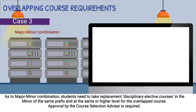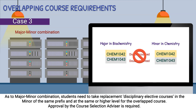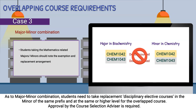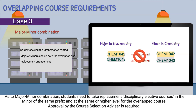As to the major-minor combination, students need to take replacement disciplinary elective courses in the minor of the same prefix and at the same or higher level for the overlapped courses. Approval by the course selection advisor is required.